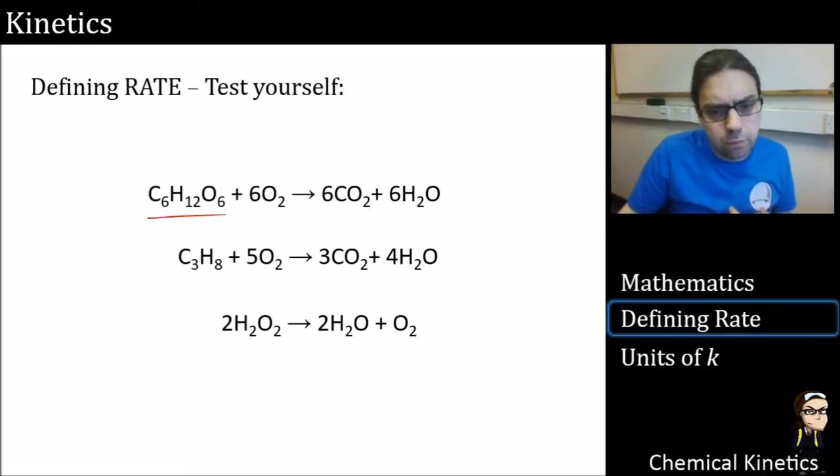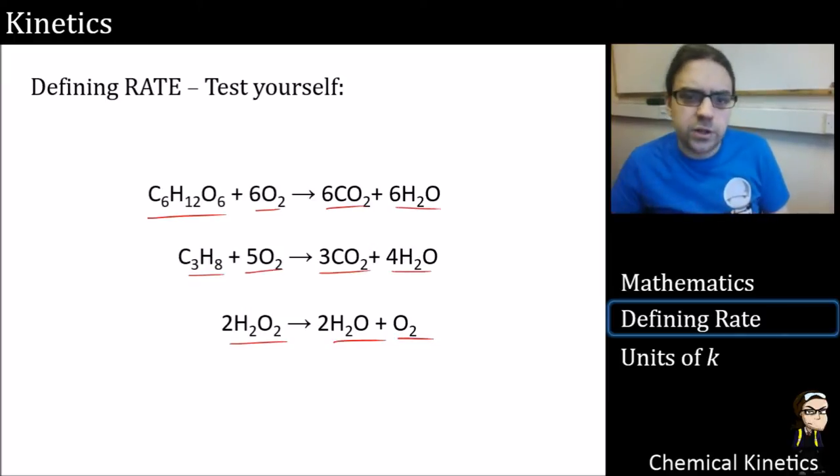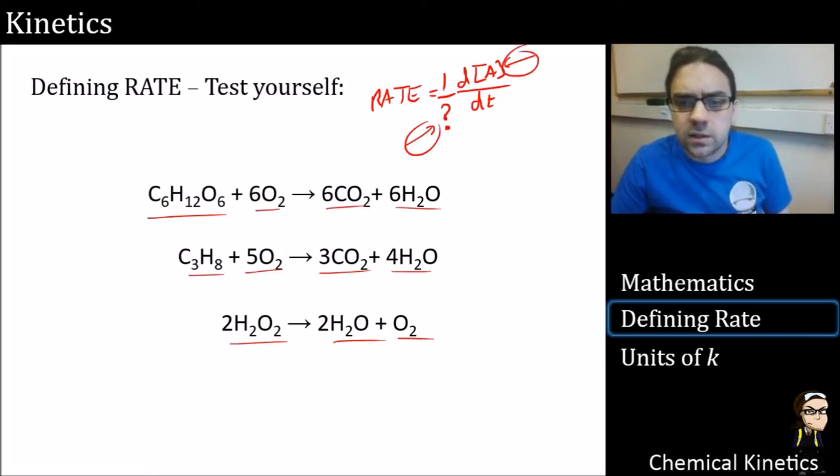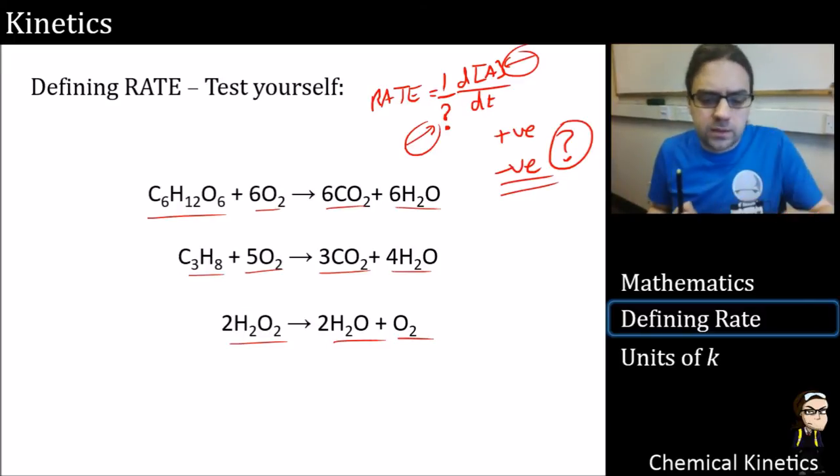Test yourself on these ones. I'm not going to give the answers out, but we'll cover them in the lecture in person. Here are some different balanced equations. Define the rate in terms of this. What you need to know is what's the stoichiometry, what is the identity, and is it positive or negative? Is it a reactant or a product? Once you've figured that out, you can write three answers down.